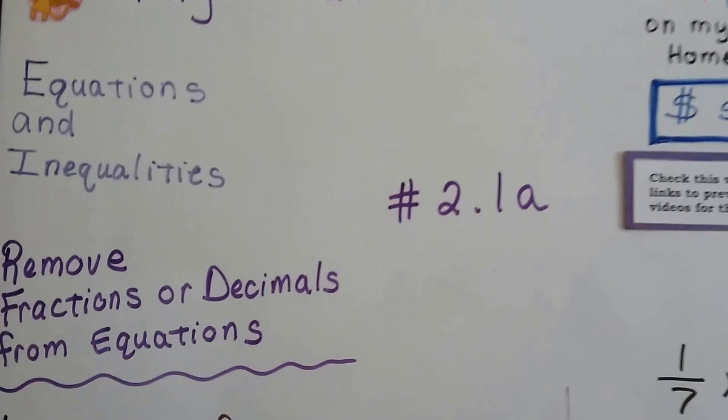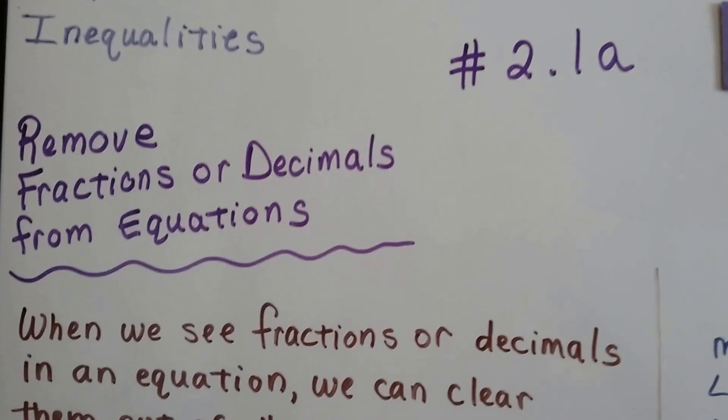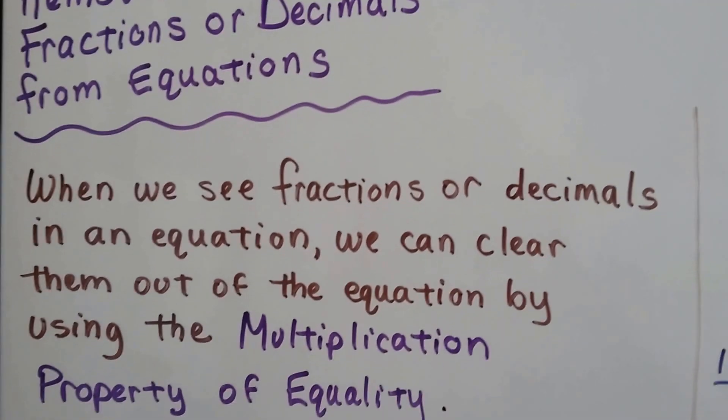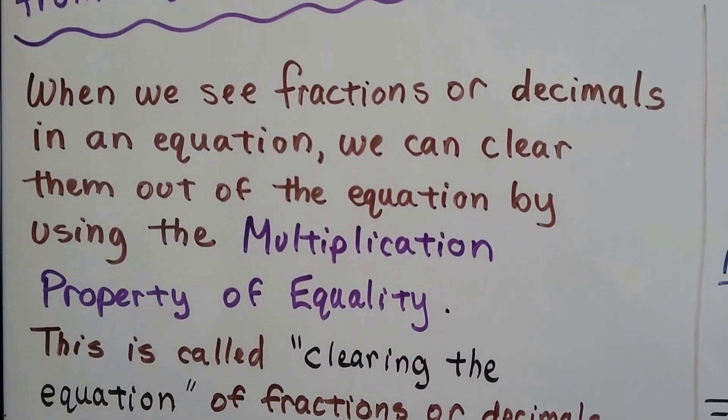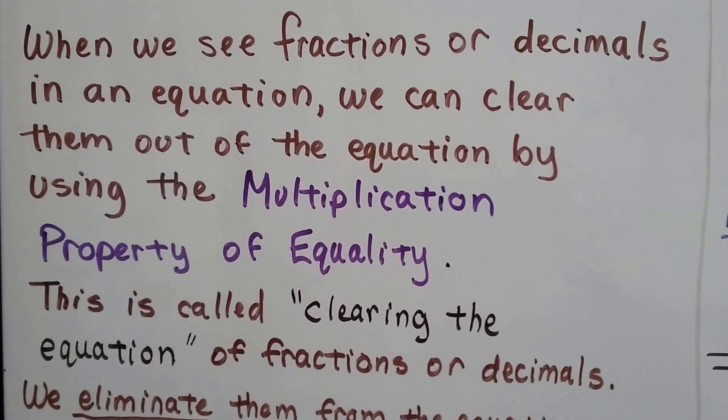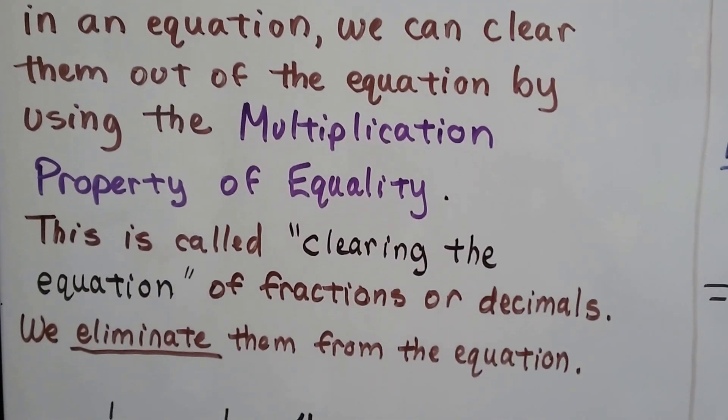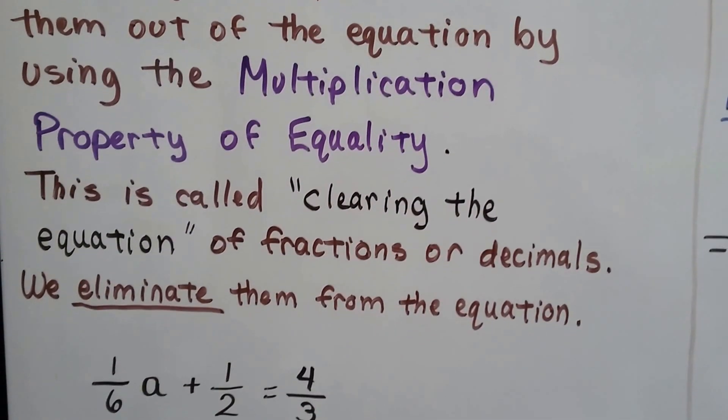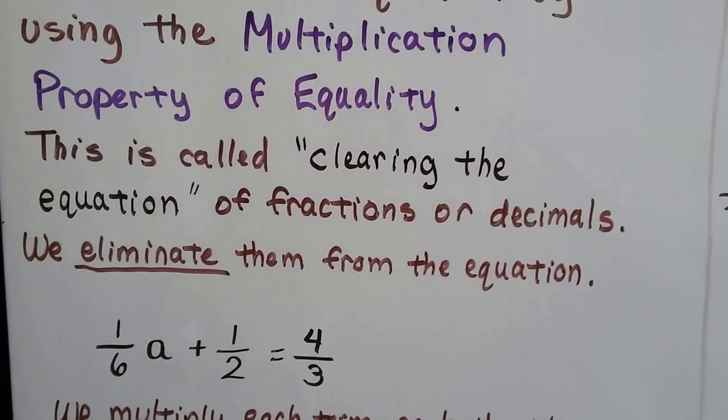Algebra 2, 2.1a. We're going to remove fractions or decimals from equations. When we see fractions or decimals in an equation, we can clear them out of the equation by using the multiplication property of equality. This is called clearing the equation of fractions or decimals.